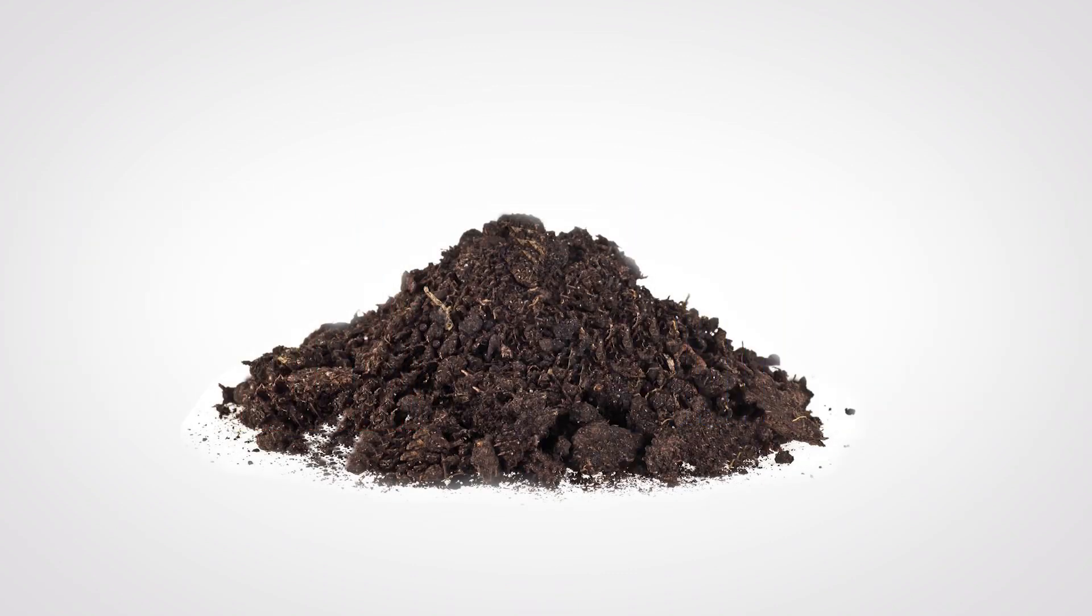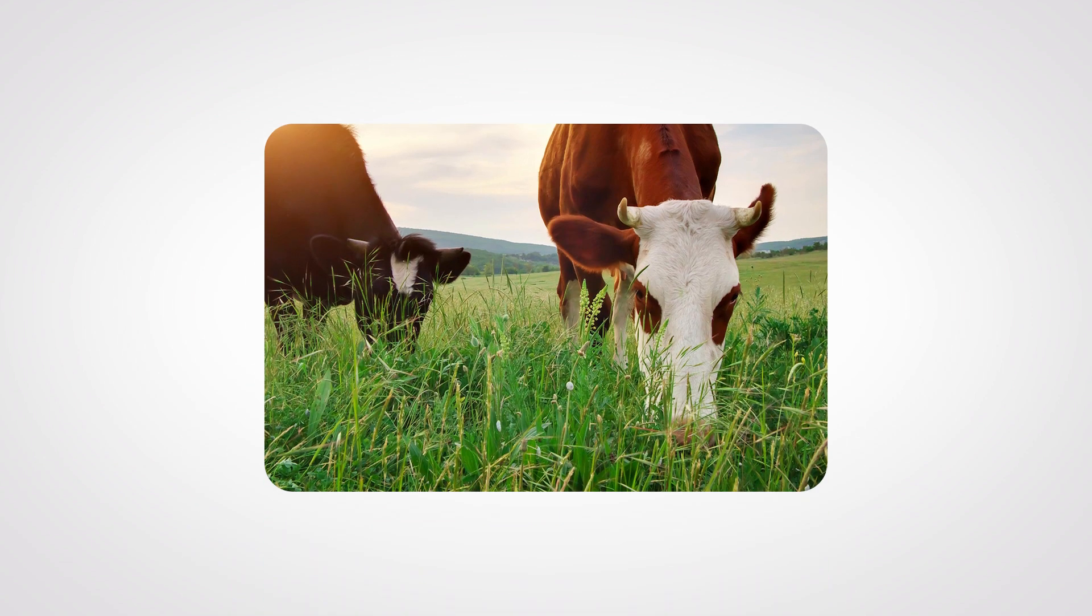Prions reside in various places. They can live in the ground for years. They can also be on the grass or other food eaten by animals.